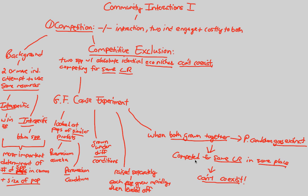One thing that students sometimes get tripped up on is: how is this a minus-minus interaction? Paramecium caudatum lost, but Paramecium aurelia was the one that won — so how did both lose? That's something we're going to look at in the second part of the Community Interactions 1 video, examining the idea of co-existing competition as a loss for both species because we don't reach our fundamental niche.